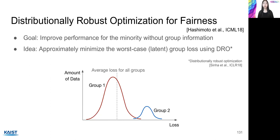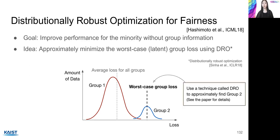Now we deal with two papers that try to achieve fairness when group information is entirely missing. The first paper aims to improve minority performance without group information. Typical empirical risk minimization (ERM) minimizes the average loss of all data, so ERM-based training usually focuses on majority group losses, which may lead to unfair results. This paper instead aims to minimize the worst-case group loss. Since we don't know group membership, we also cannot identify the worst-performing group. To address this, the paper uses distributionally robust optimization (DRO), which identifies the worst-performing samples and gives them more weight so the worst-performing group achieves better performance.